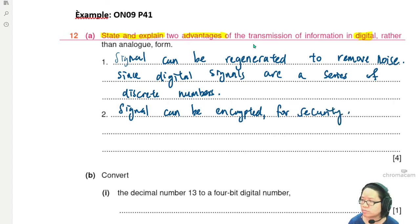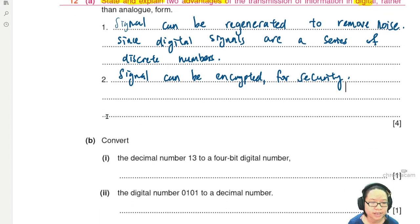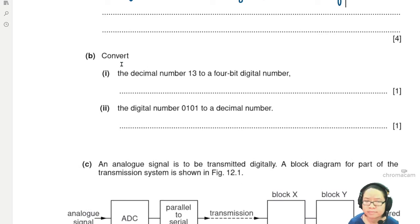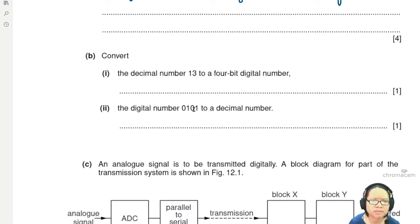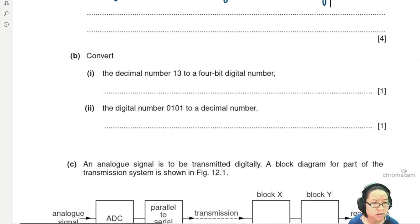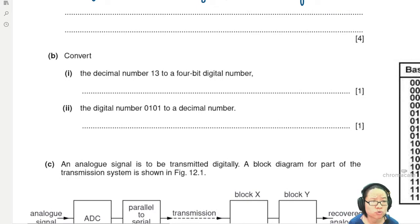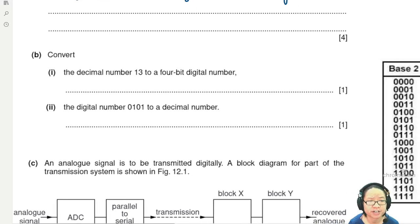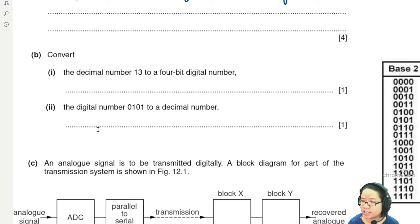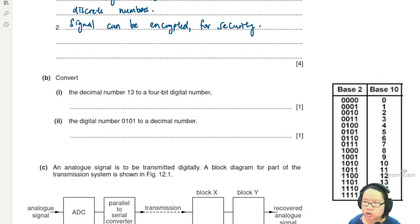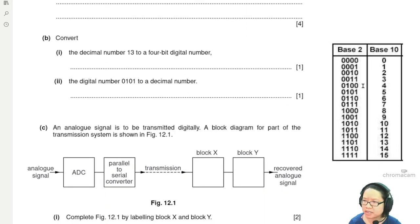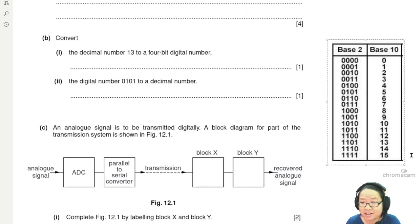Next: convert the decimal number 13 to a four-bit digital number, and convert the digital number 0101 to a decimal number. I will teach you how to use your calculator for this — if you already know the mathematics, go ahead.